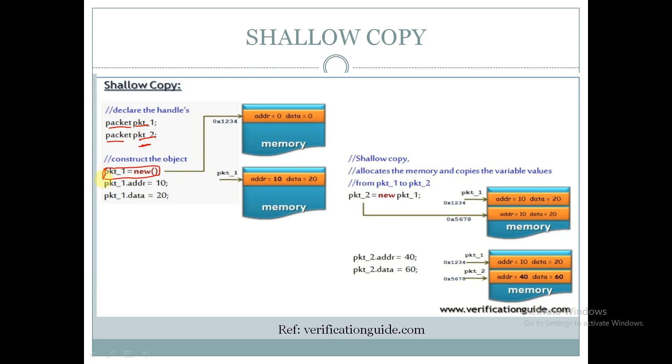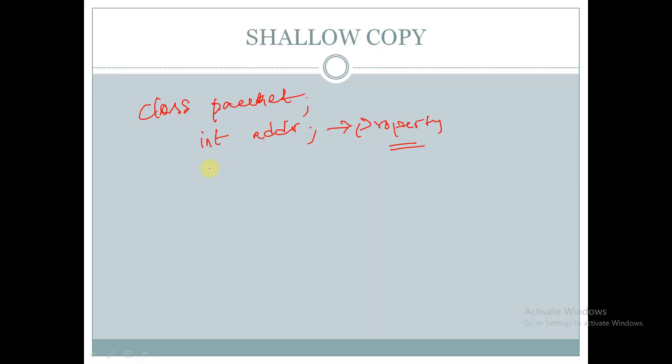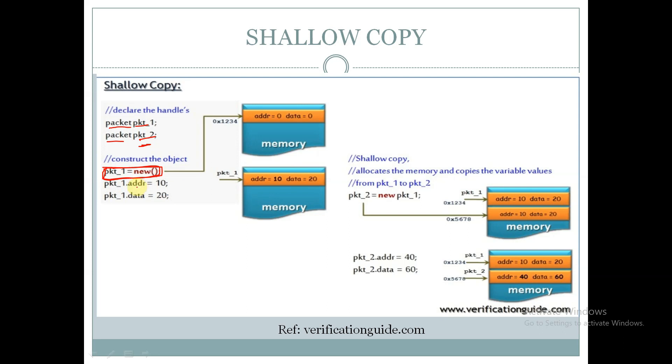This class also has another property called data. So these two are the properties of the class Packet. We are modifying addr and data using the handle pkt1, that is pkt1.addr equal to 10 and pkt1.data equal to 20.